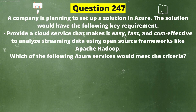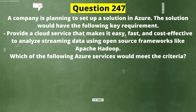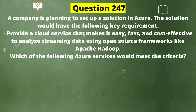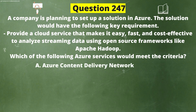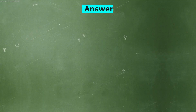Next question. A company is planning to set up a solution in Azure. The solution would have the following key requirement: provide a cloud service that makes it easy, fast, and cost-effective to analyze streaming data using open source frameworks like Apache Hadoop. Which of the following Azure services would meet the criteria? Option A: Azure Content Delivery Network. Option B: Azure HD Insight. Option C: Azure Load Balancer. Option D: Azure Synapse. The correct answer is Option B, Azure HD Insight.